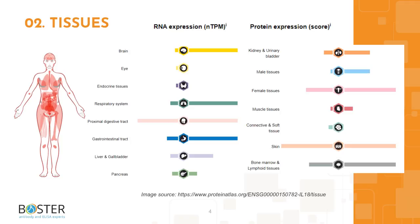High interleukin-18 protein expression is found in the cerebellum, respiratory system, proximal digestive tract, gastrointestinal tract, female tissues, skin, and lymphoid tissues. Lower levels of protein expression are found in the liver, gallbladder, kidney, urinary bladder, and male tissues.